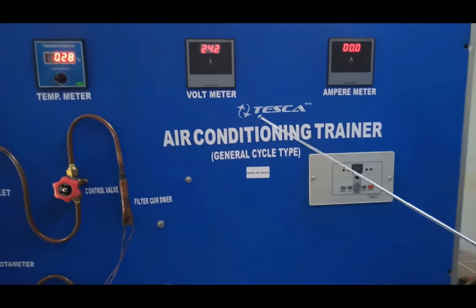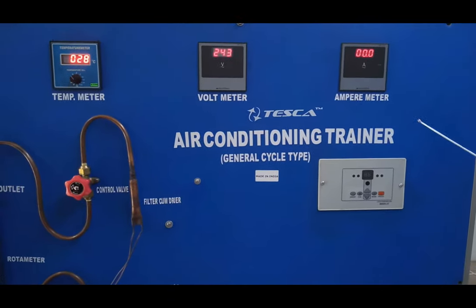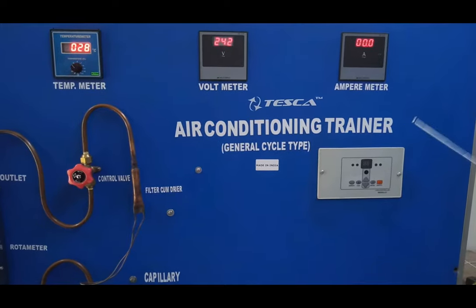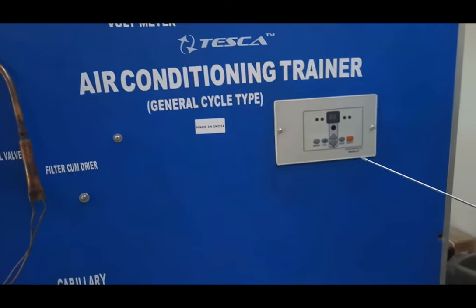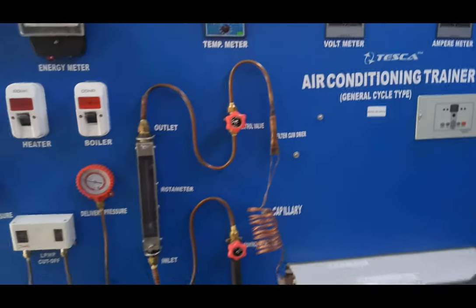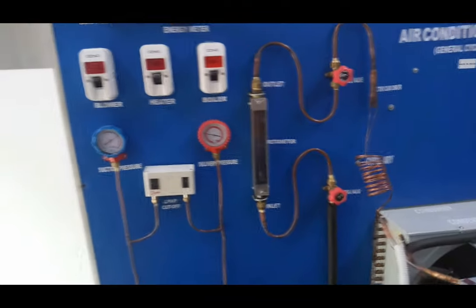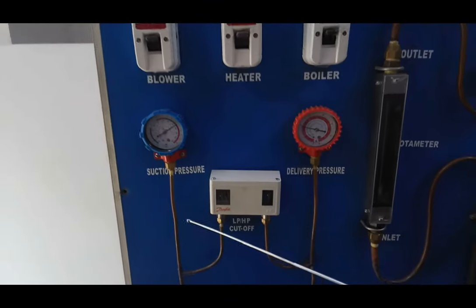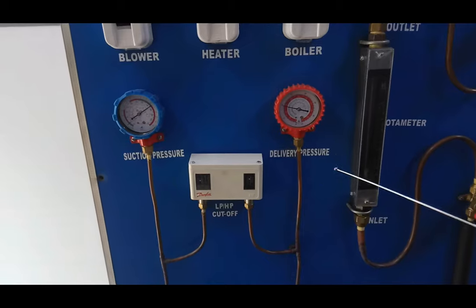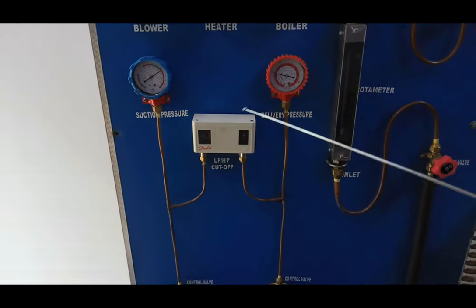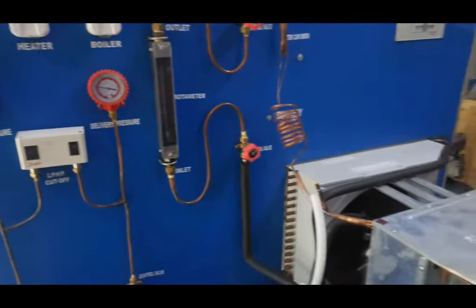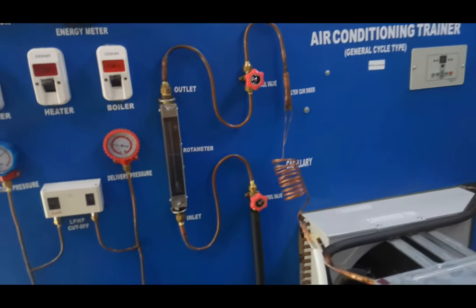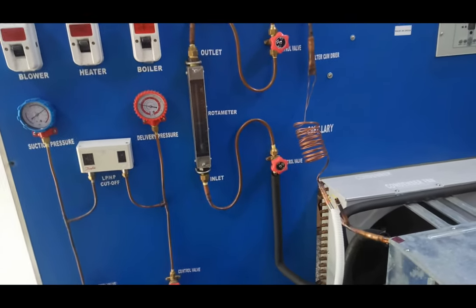This is the voltmeter which shows the voltage supplied to the AC, and this is the ammeter which describes the load consumption of the AC. This is the control panel for setting the temperature and stopping the AC. These are the pressure gauges which show the suction pressure and delivery pressure from the compressor. And this is the LP-HP cutoff pressure switch, and these are the control valves which are used to flow the refrigerant inside the cycle.